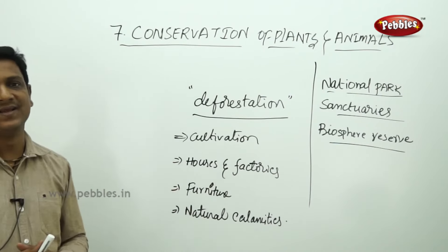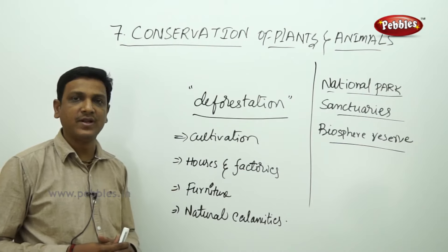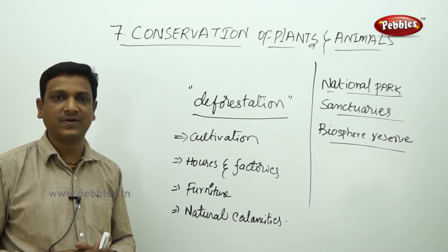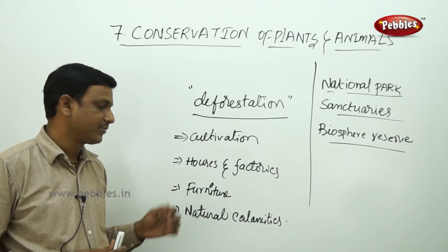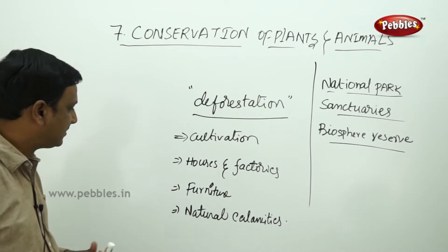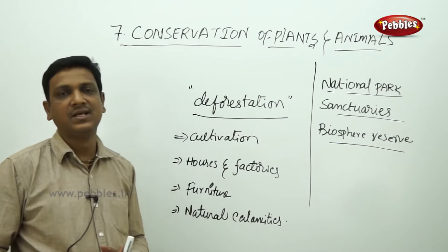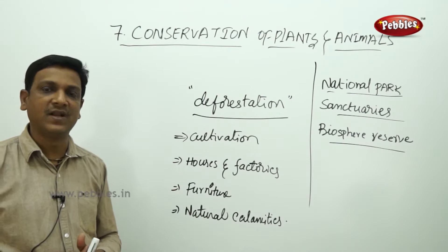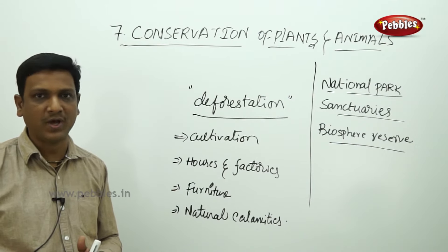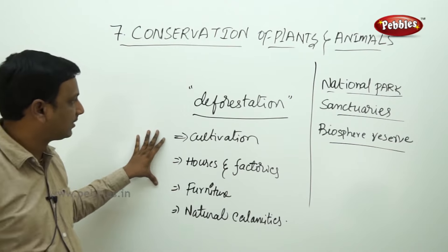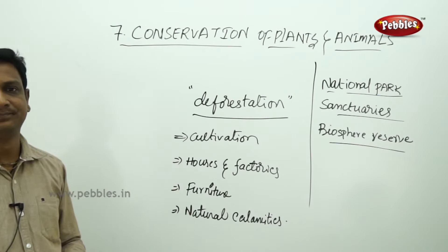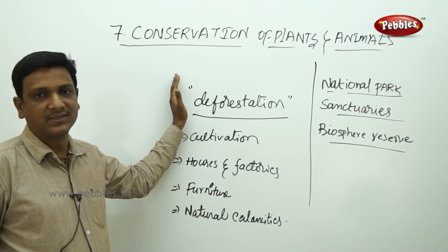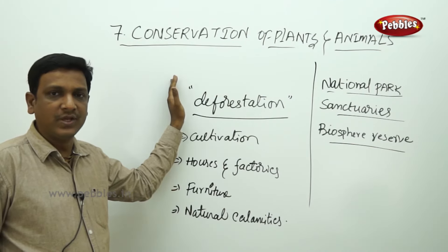Another reason for deforestation is the need for wood — forests are cut for furniture, paper, and other wooden products. Additionally, natural calamities like forest fires destroy forests in large quantities, and severe floods also damage forests. However, the first three causes are due to human intervention. Because of all these, deforestation is taking place.